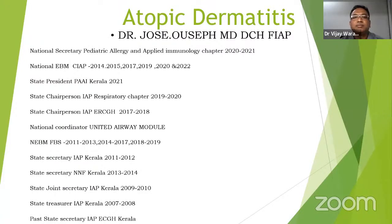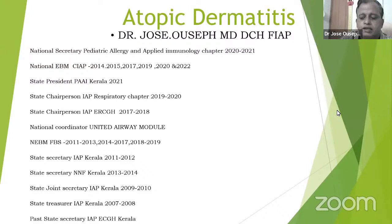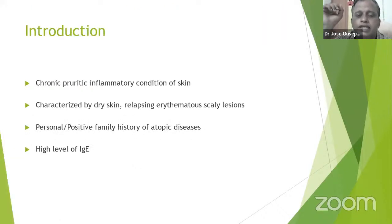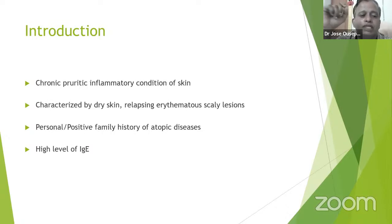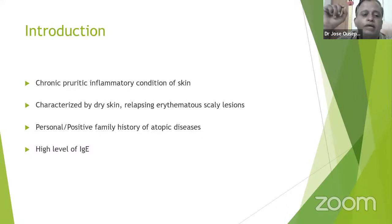Atopic Dermatitis is one of the common issues we come across daily. It is a chronic pruritic inflammatory condition of the skin, characterized by dry skin, relapsing eczema, erythematous scaly lesions. There may be a positive personal or family history of atopic disease, and an important feature is high levels of serum IgE.